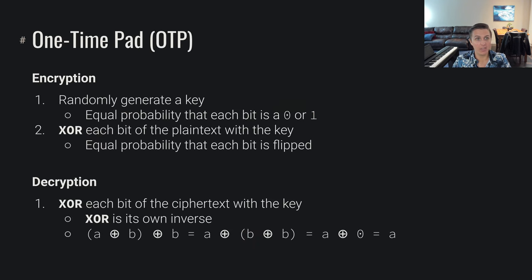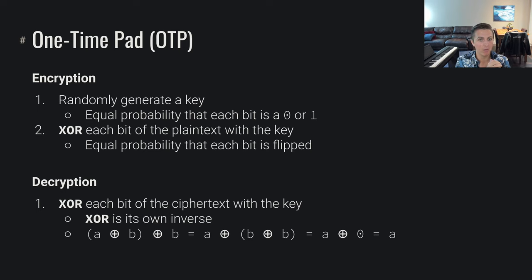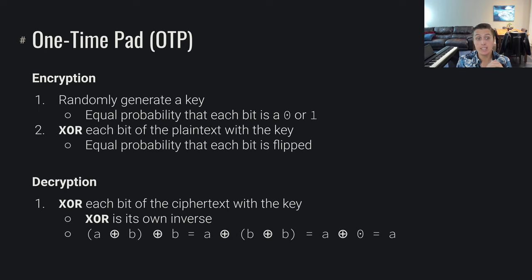One method of doing this is what's known as a one-time pad. In order to perform encryption, we randomly generate some key — a bunch of random ones and zeros with equal probability that each bit is a zero or one. We then XOR each bit of the plaintext with the key, which implies an equal probability, based on how XOR works, that each bit is flipped.